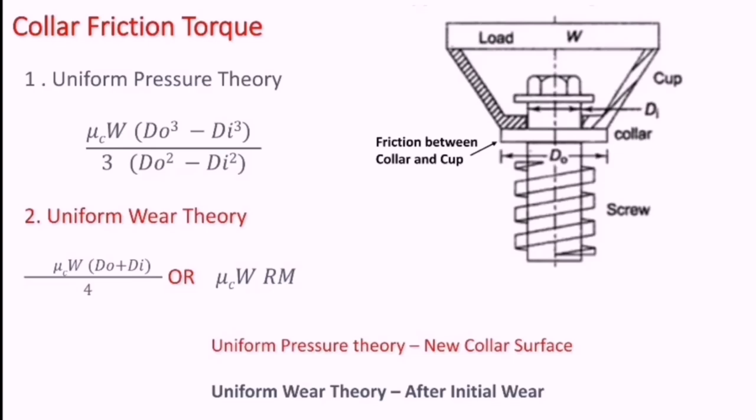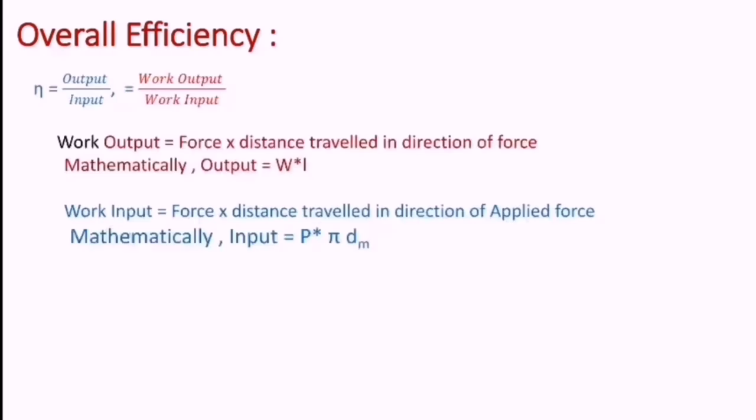Hence, logically, we use uniform wear theory for our calculation purpose. Now, having seen the torque required to overcome friction between the collar and the cup, let us go towards the overall efficiency of the power screw, which we had not considered earlier. The same relations apply: efficiency equals output divided by input.